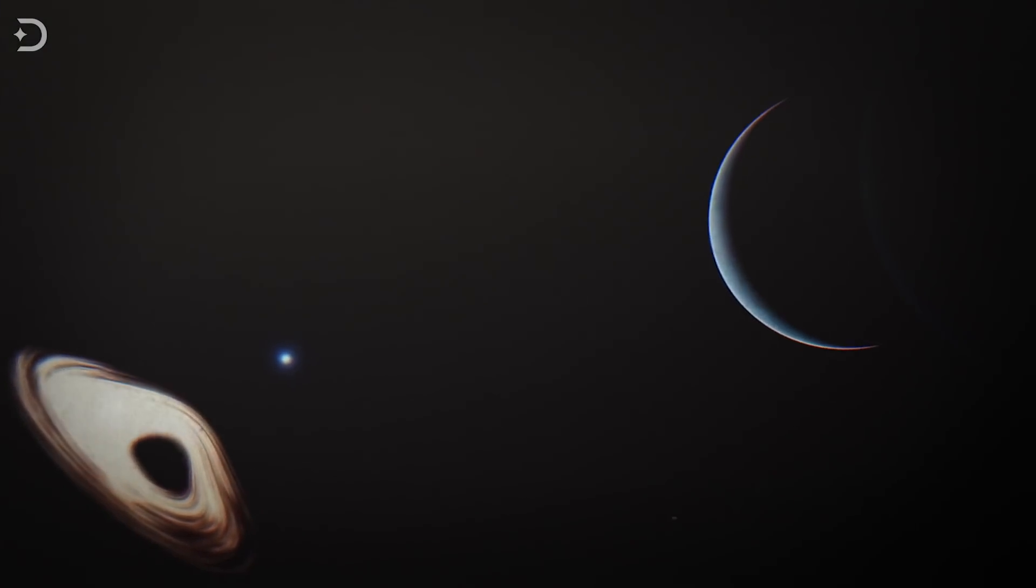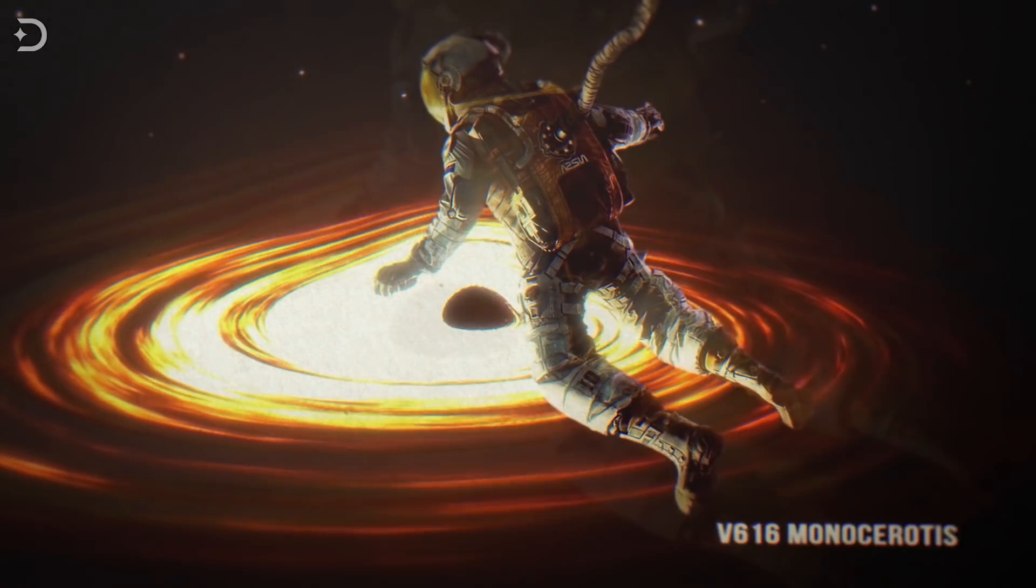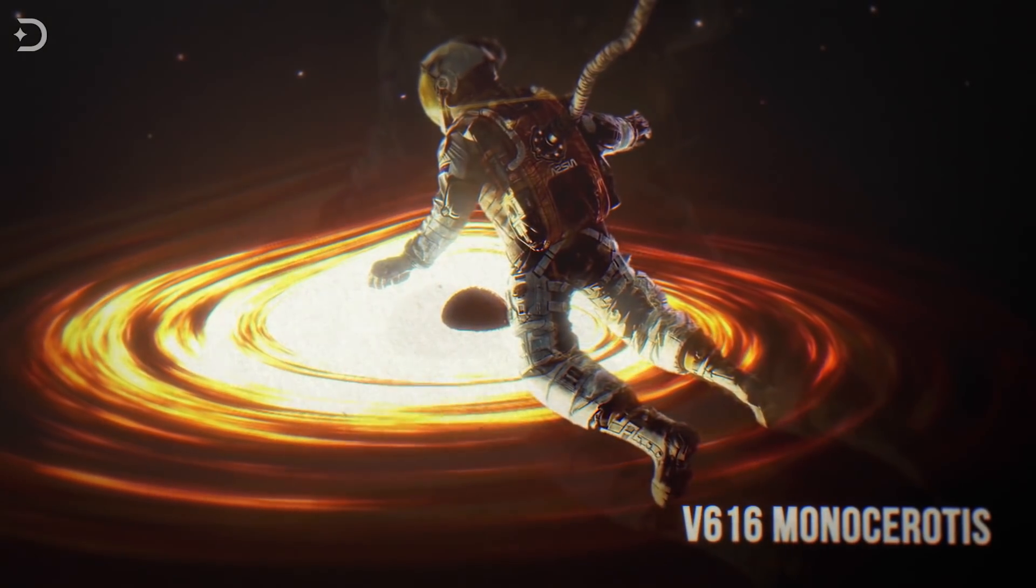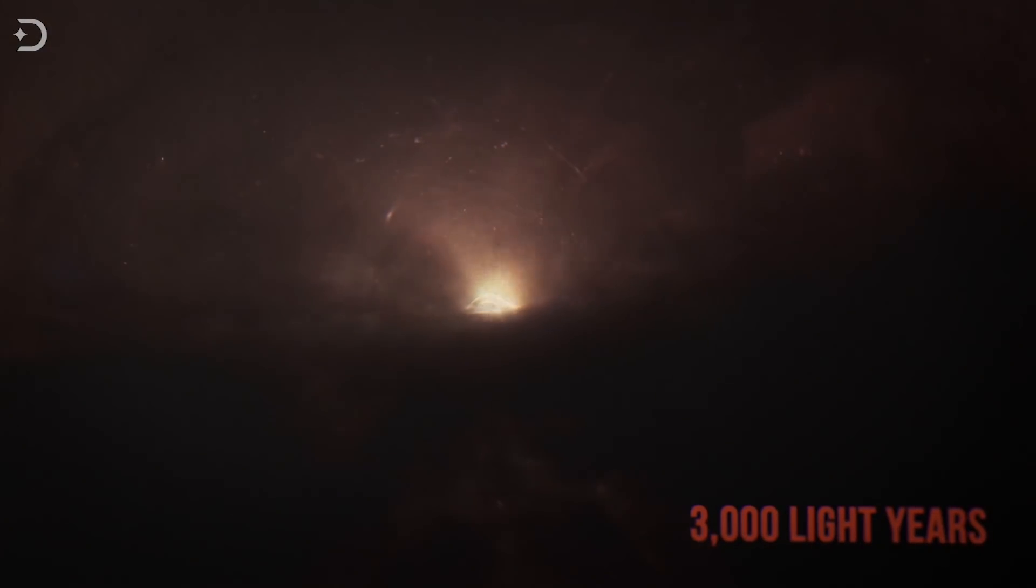Before the black hole in HR 6819 was discovered, the next closest black hole to Earth was V616 Monocerotis, which is 3000 light years away.